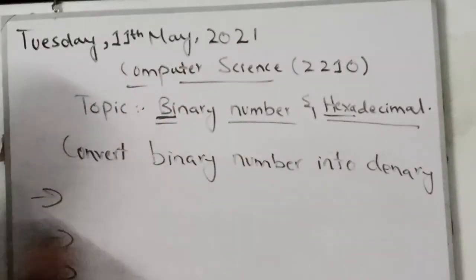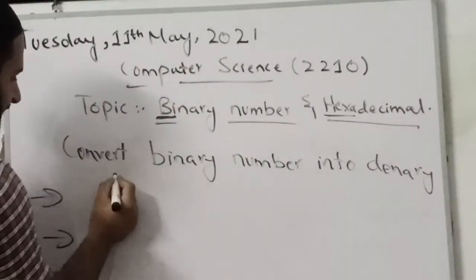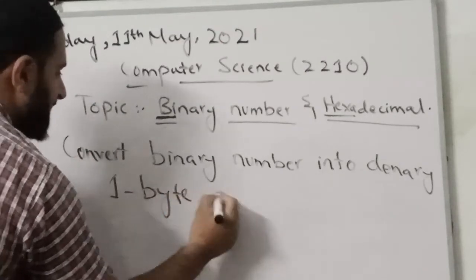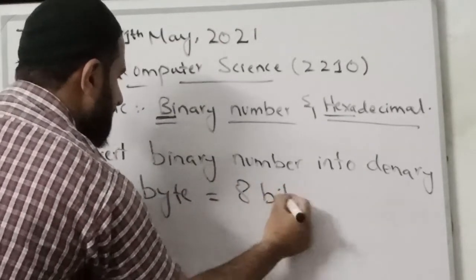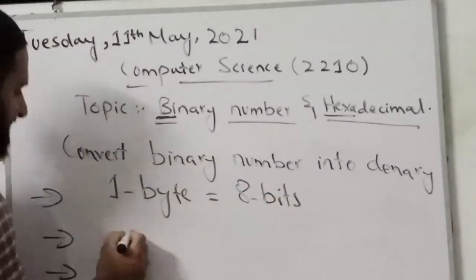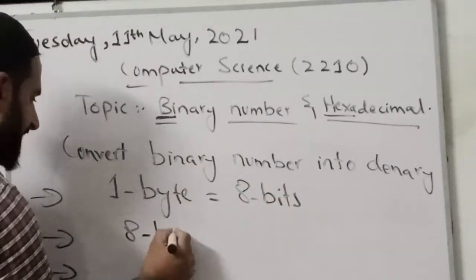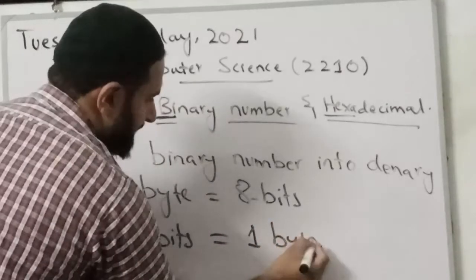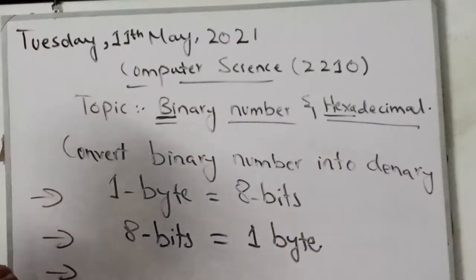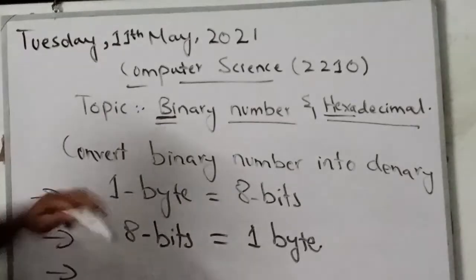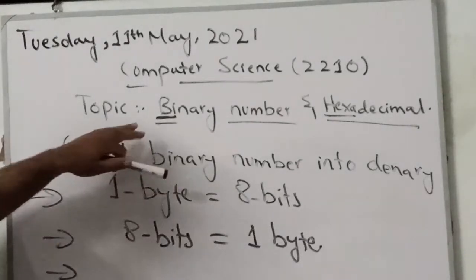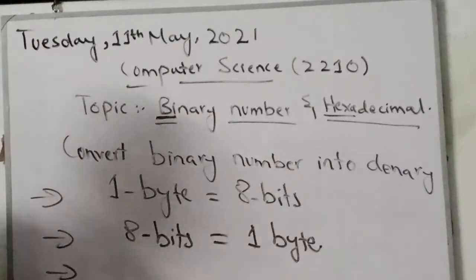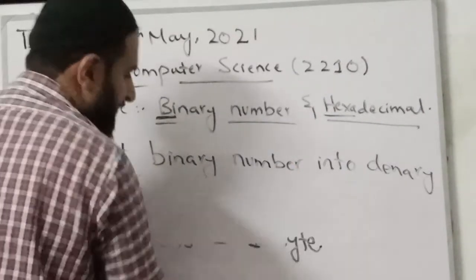One byte of information is equal to 8 bits. And you can say that collection of 8 bits are called 1 byte. I will explain these in detail in the next topics, but let's stick to our objective: convert binary number into denary conversion. We are only discussing today's conversion.